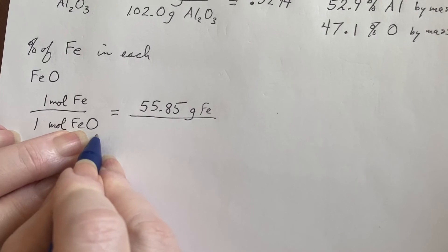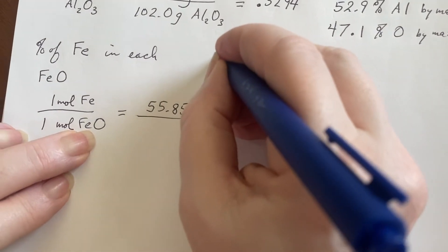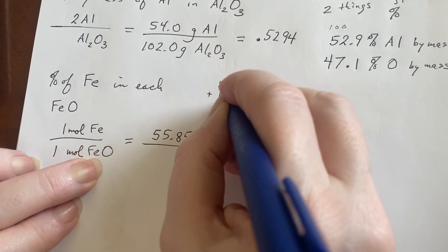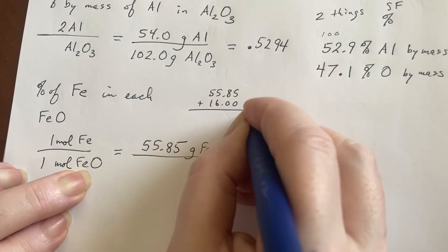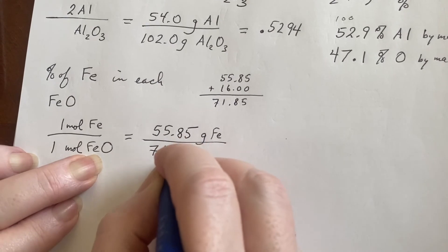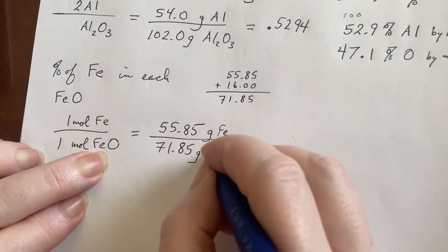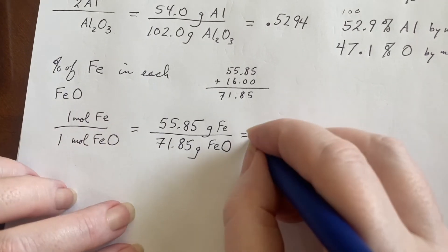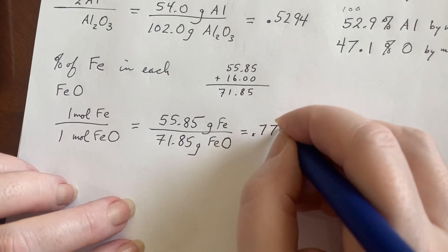Now, that is combined with oxygen. So I better write something down. 55.85 and then plus 16.00 because we're rounding back a little bit. So 71.85 grams of FeO.